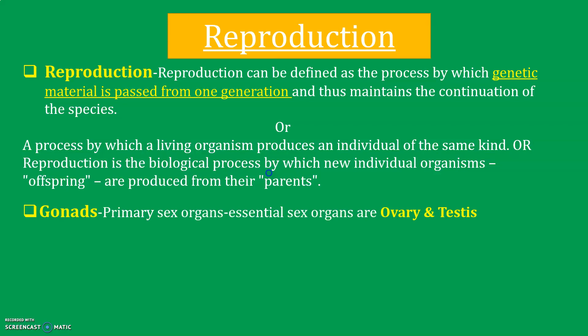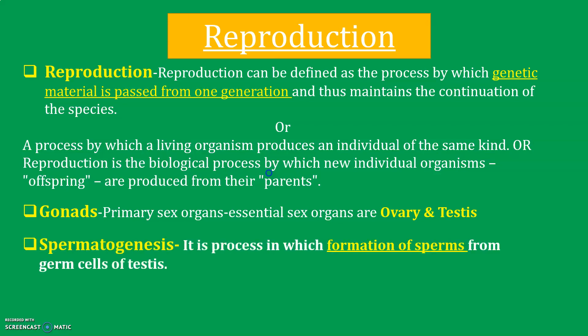What do we mean by gonads? Gonads are the primary sex organs — also called essential sex organs — known as ovaries in females and testes in males. What is spermatogenesis? The formation of sperm from the germ cells of the testes is called spermatogenesis. Oogenesis means the formation of ova from the ovaries. These are important terminologies for exam purposes — write them in your notebook.